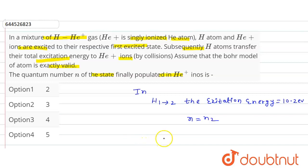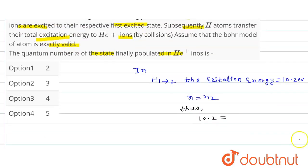Thus we can write 10.2 electron volts is equal to 13.6 into z squared.